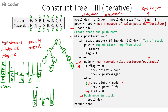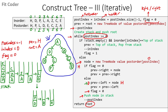We check the while condition — postindex is now less than 0, so the while condition fails and we come out of the while loop. We return the root node, which is A. This is the tree we obtain using the inorder and the postorder traversals.